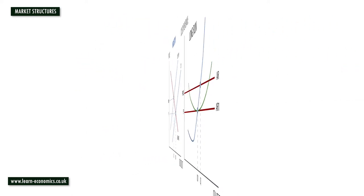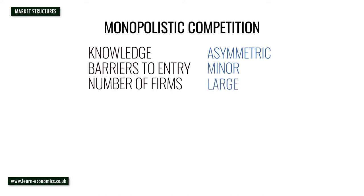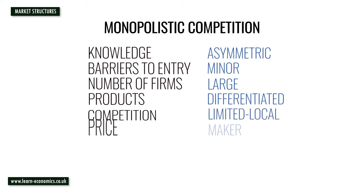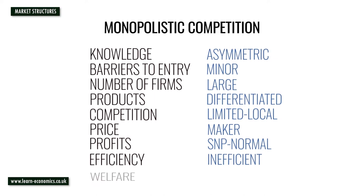For monopolistic competition, knowledge is only partial and asymmetric. Minor barriers to entry exist. There are large numbers of independent firms. Products are differentiated. Firms are price makers and can vary prices. Supernormal profits are available in the short run but not the long run.